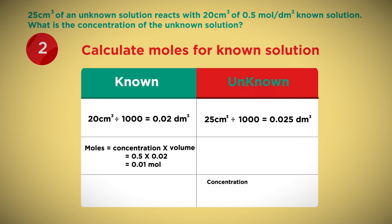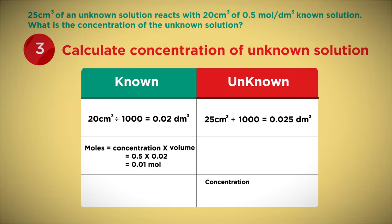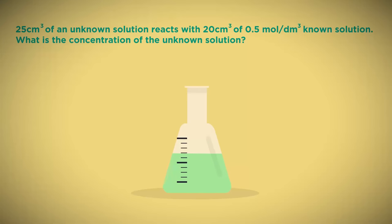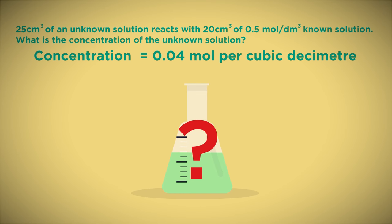Using this, we can now calculate the unknown concentration. The concentration of the unknown solution equals its moles divided by volume, which equals 0.01 divided by 0.025, which equals 0.4 moles per cubic decimeter. So the unknown solution was at a concentration of 0.4 mole per cubic decimeter.